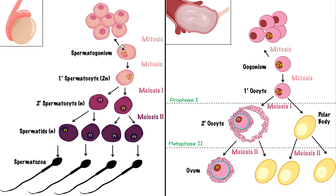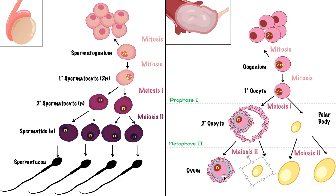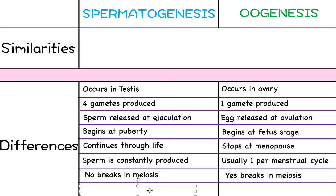The last key difference: in spermatogenesis, one stem cell produces four equally sized sperm cells — all divisions are equal in size. In oogenesis, the process produces a secondary oocyte and a polar body, where the polar body is much smaller than the oocyte, so the division is unequal. A fancier way of saying this is that in males there is equal cytokinesis, whereas in females it is unequal — the cells produced are different in size.